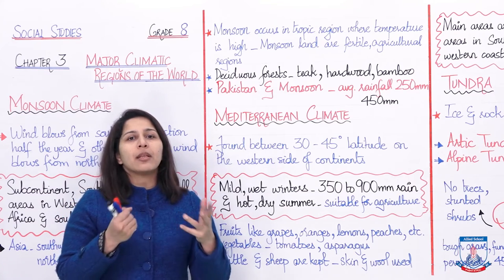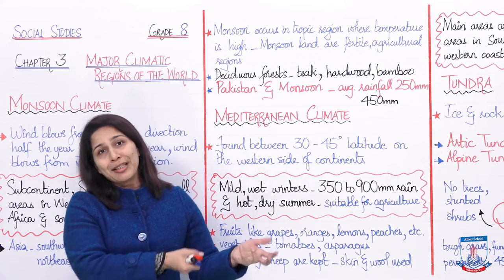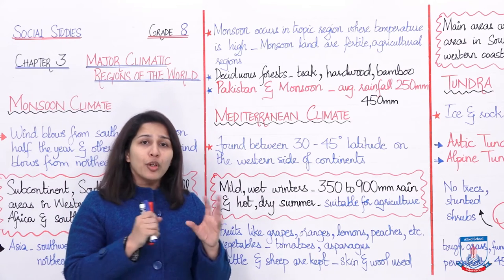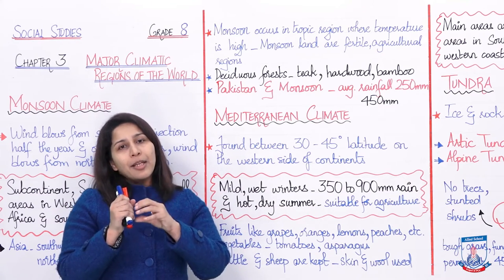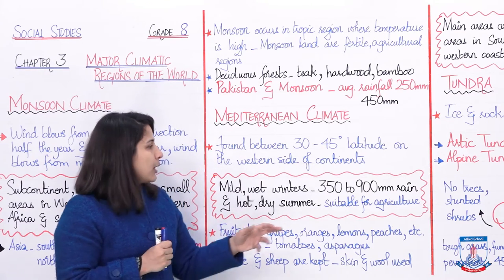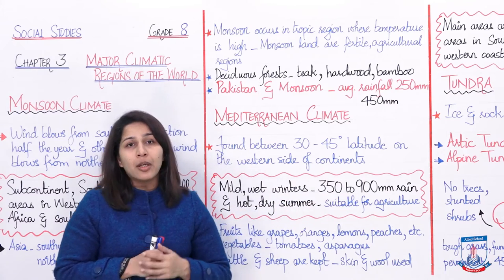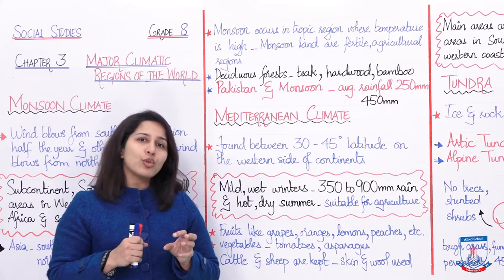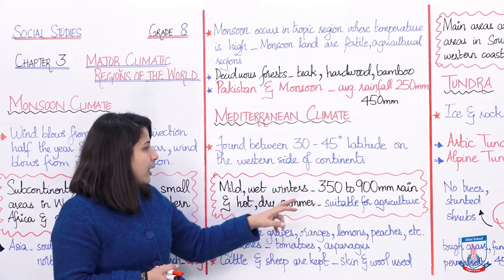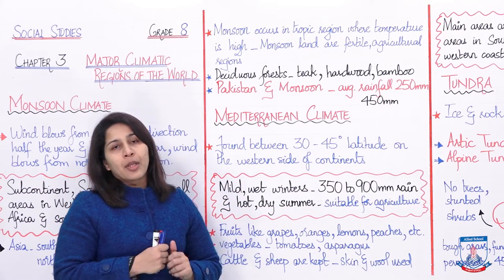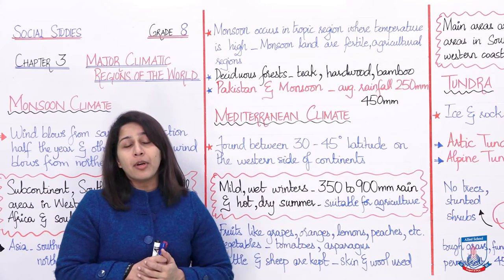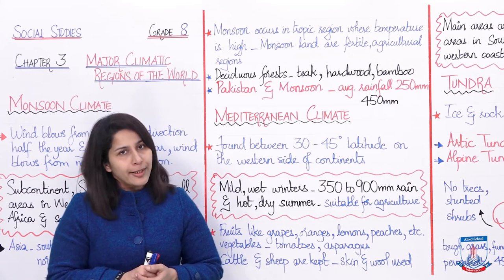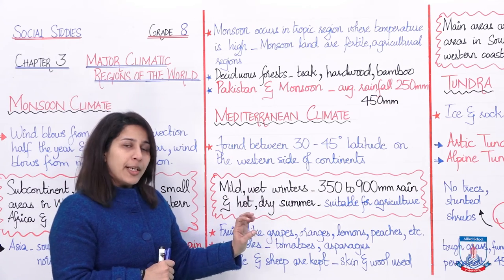Mediterranean climate ki characteristics: it goes with mild, wet winters — sardhi bahut shiddat mein nahi hogi lekin baarish bhi hogi, nominal amount mein. The amount of rainfall is 350 to 900 mm per year. The summers are dry and hot — zyada baarish nahi hoti summers mein. The soil is suitable for agriculture because 350 to 900 mm rainfall per year provides a lot of water for crops.